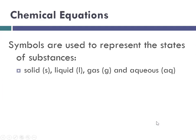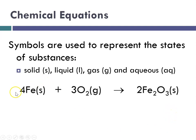So in these equations, let's go over some symbols that are used. Sometimes we use symbols to represent the states of matter. So we might say solid, liquid, gas, and aqueous. So in my previous example, if it was balanced, I could write four iron, and that's a solid at room temperature, plus three oxygen, which is a gas at room temperature react to produce or yield two iron three oxides.